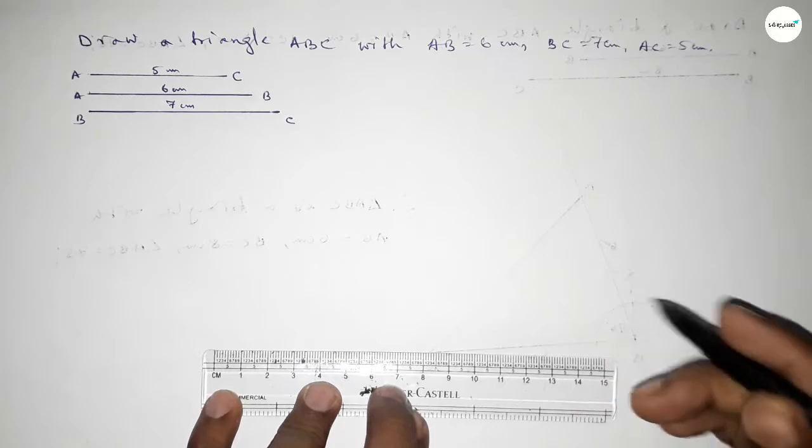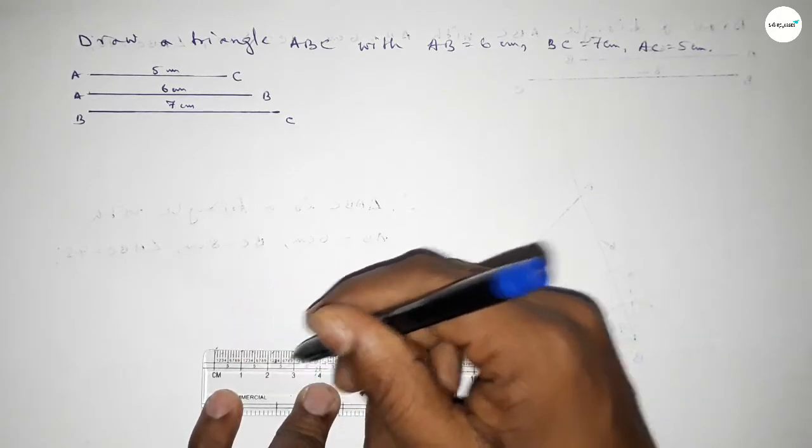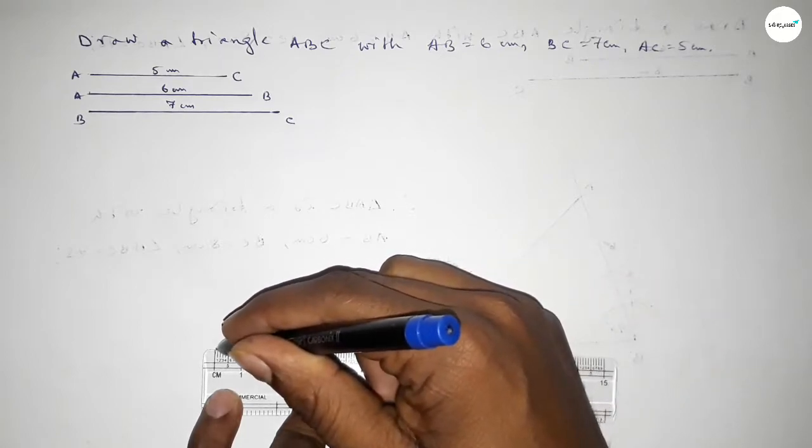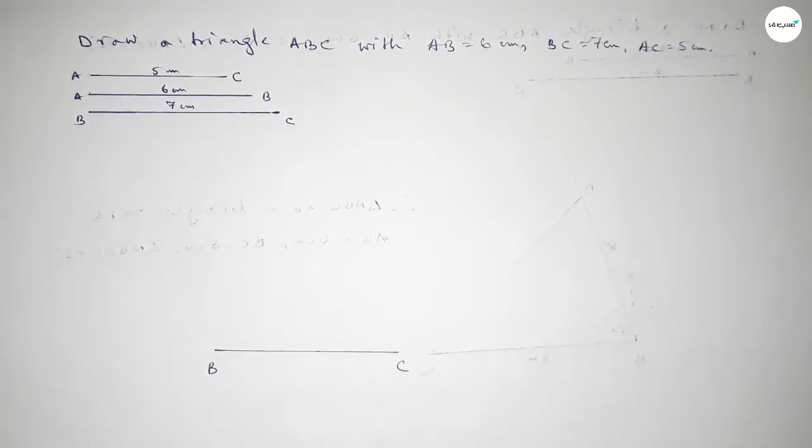Now first of all we have to draw here a line of length 7 centimeter, the line BC. So this is 7 and taking here B point and here C point.